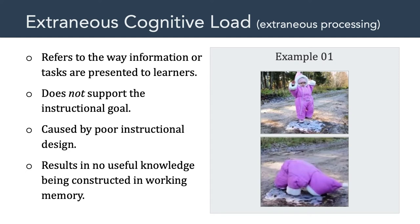Now let's talk about the second kind of cognitive load: extraneous cognitive load. That has to do with the way information or tasks are presented to learners. Extraneous cognitive load is unwanted processing because it does not support the instructional goal. It can be caused by poor instructional design, resulting in no useful knowledge being constructed in working memory. A simple humorous example: imagine teaching a baby how to walk on a patch of ice. You would never do that because the ice serves no useful purpose — that's extraneous cognitive load.